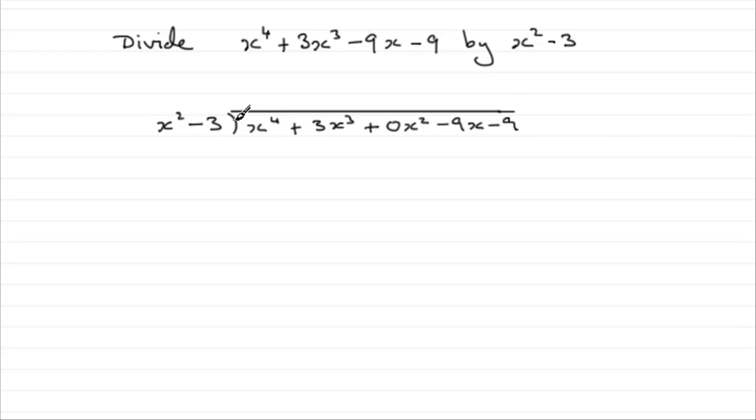In the usual way now, all we do is say, what do we multiply the x squared by in order to get x to the power 4? Well, it's got to be x squared, so we stick that up there, and now we do x squared times x squared minus 3. And what does that give us? x squared times x squared, x to the power 4, and then x squared times minus 3 is minus 3x squared.